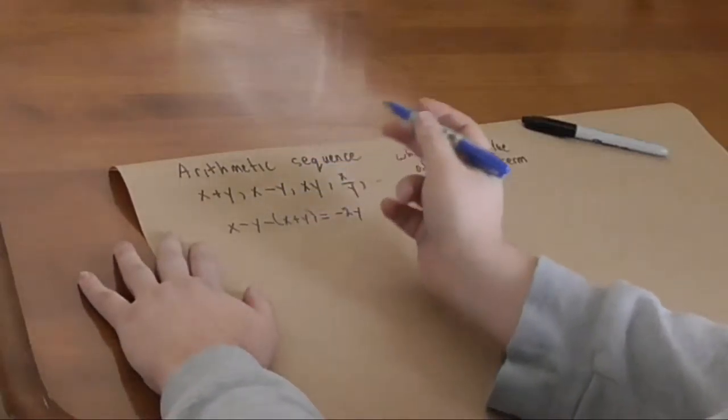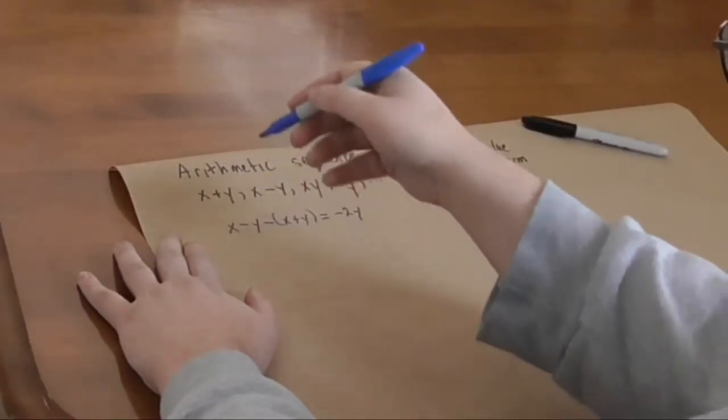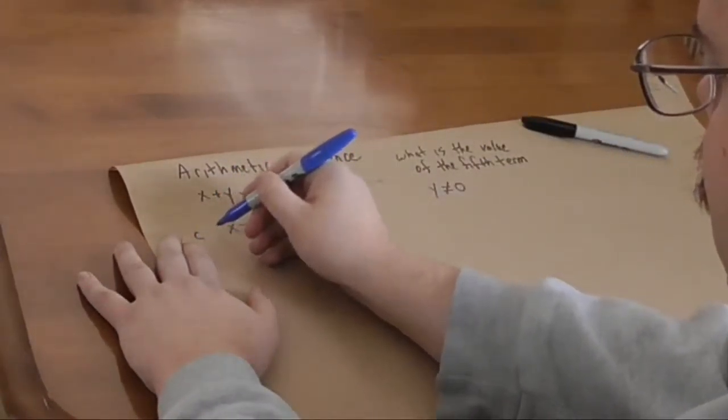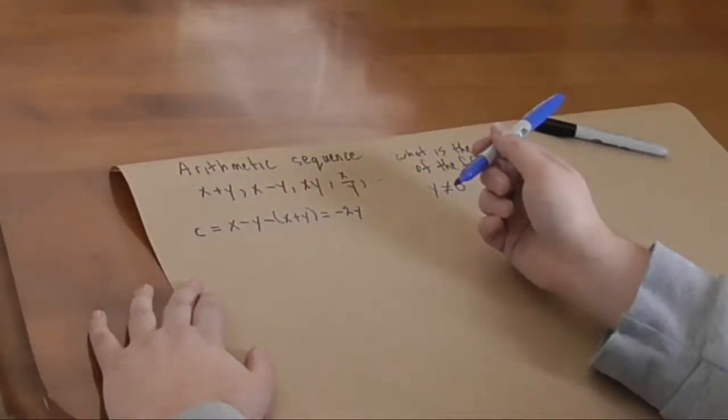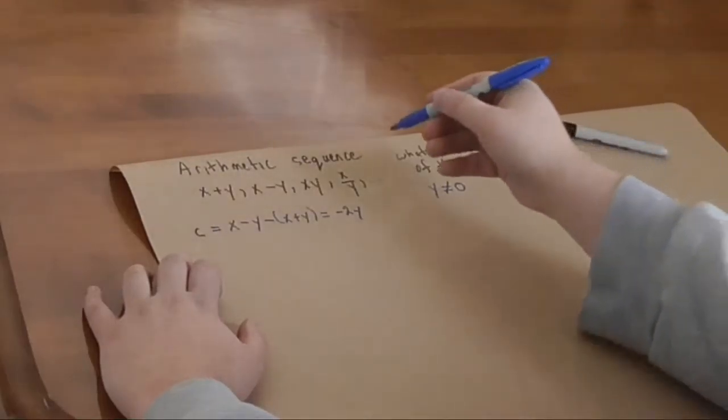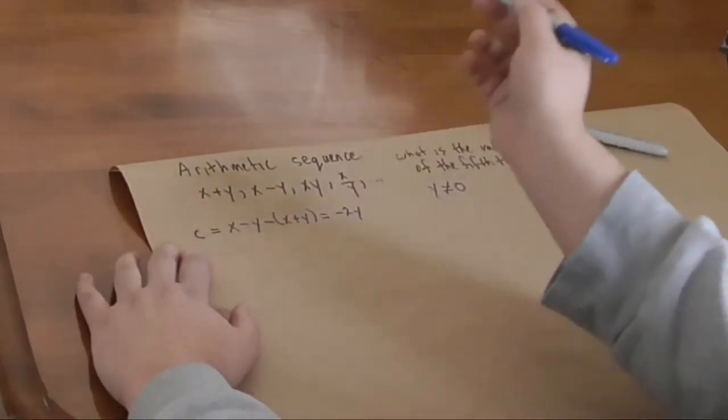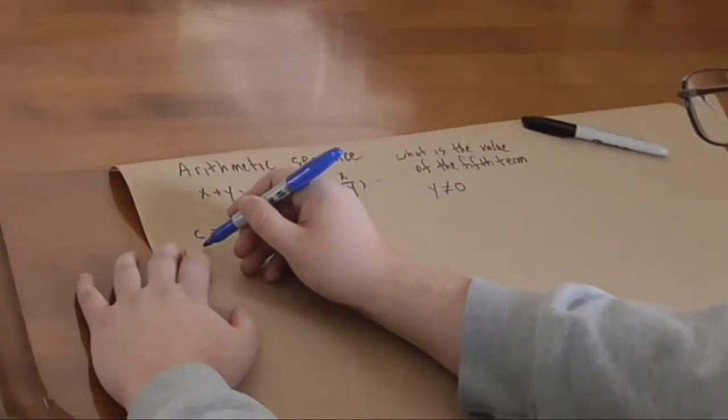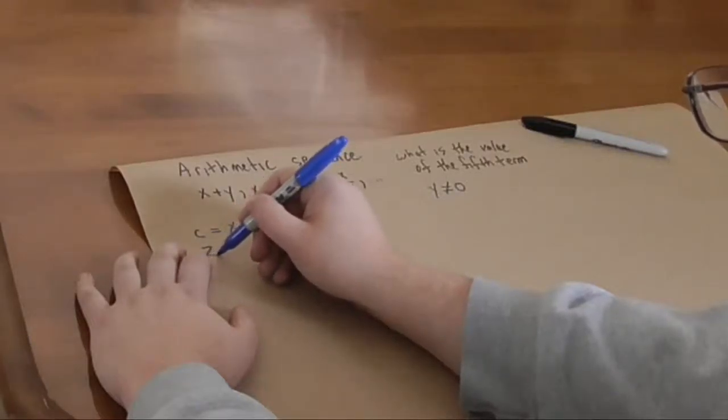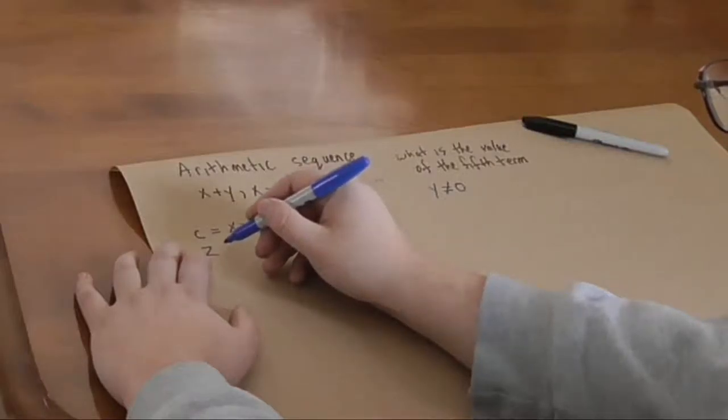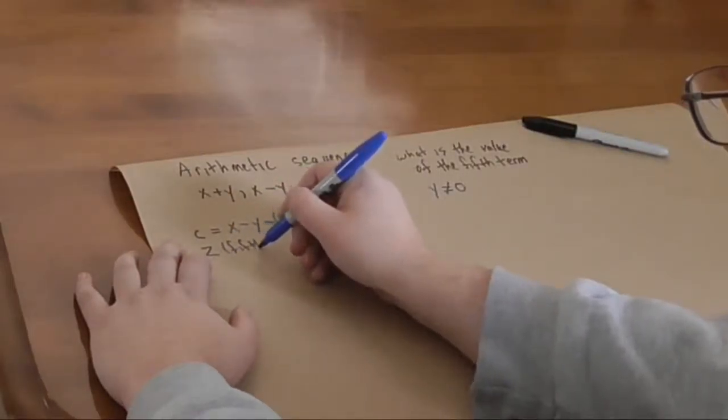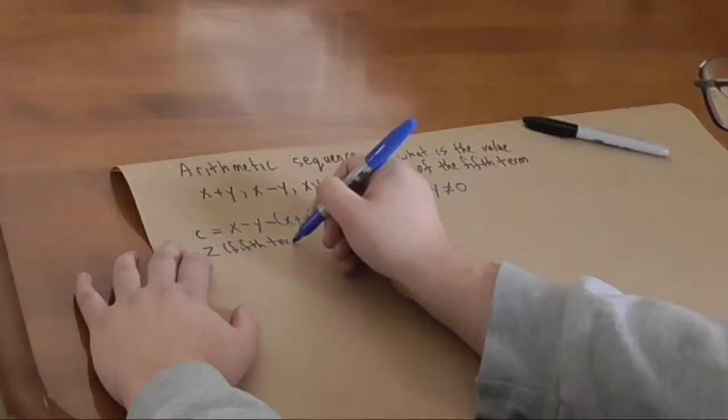Where it goes down by minus two y each step. Now, I'm going to call this c, for common difference. I'm going to call the fifth term z, the fifth term.